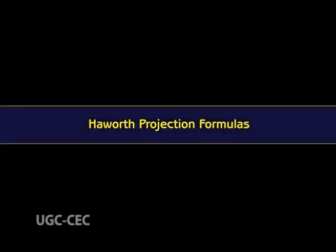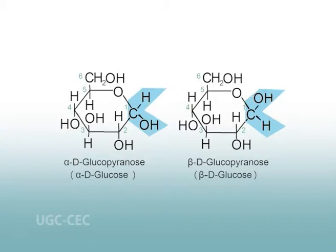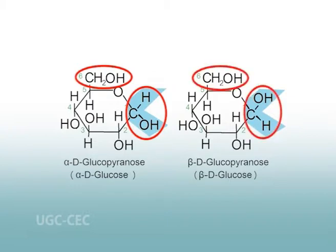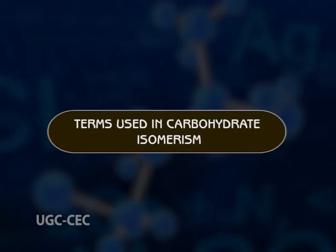Next, let's look at the Haworth projection formula. The Haworth projections represent the stereochemistry of sugars more realistically than do the Fischer projections, and we shall continue to use Haworth projections in our discussion of sugars. These cover the structures of alpha and beta D-glucose, which are both pyranoses, and beta D-ribose, which is a furanose. In the alpha anomer, the hydroxyl on the anomeric carbon is on the opposite side of the ring from the terminal CH2OH group, pointing down. In the beta anomer, it is on the same side of the ring, pointing up. The same convention holds for alpha and beta anomers of furanoses. The alpha and beta anomers of D-glucose interconvert in aqueous solution by a process called mutarotation.